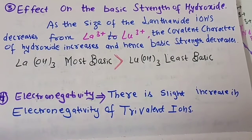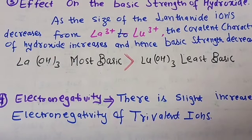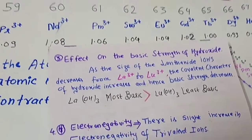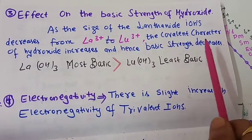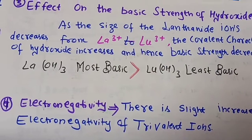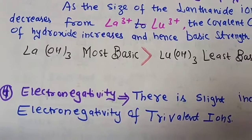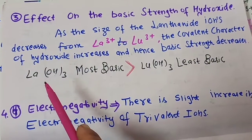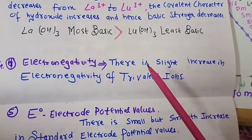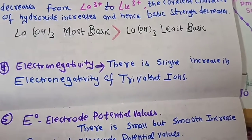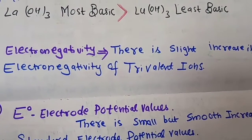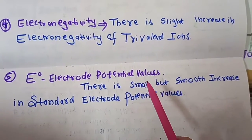The next consequence is the effect on the basic strength of the hydroxides. As the size of lanthanide ions decreases from lanthanum to lutetium, the covalent character of the hydroxides increases. As covalent character increases, basic strength decreases. So the most basic hydroxide is lanthanum hydroxide and the least basic is lutetium hydroxide. Additionally, there is a slight increase in the electronegativity — the tendency to attract electrons — of the trivalent ions along the series as size decreases.